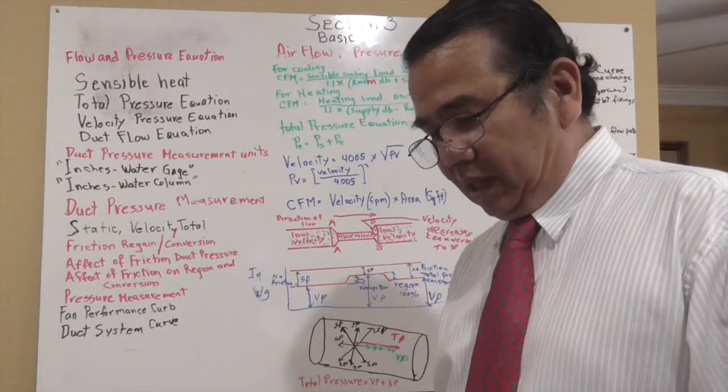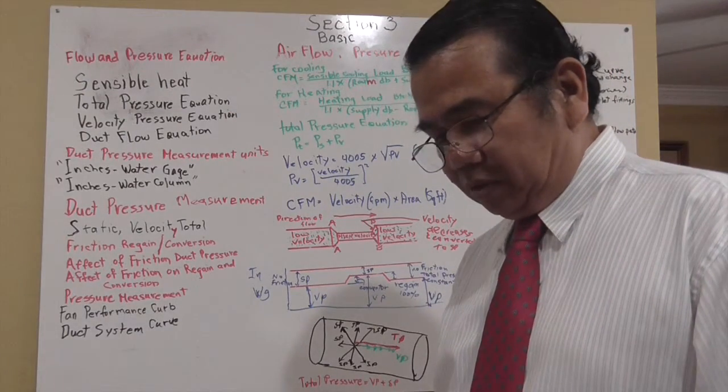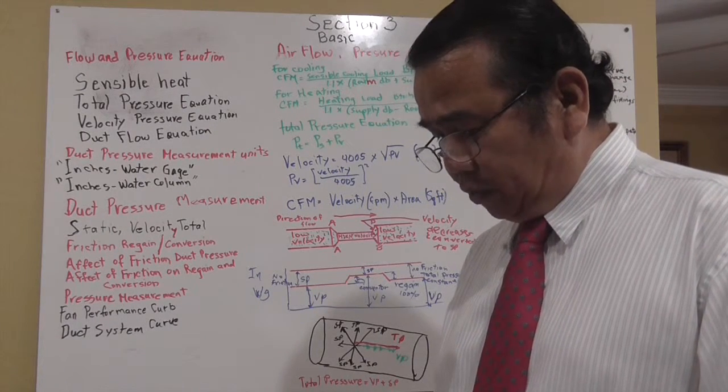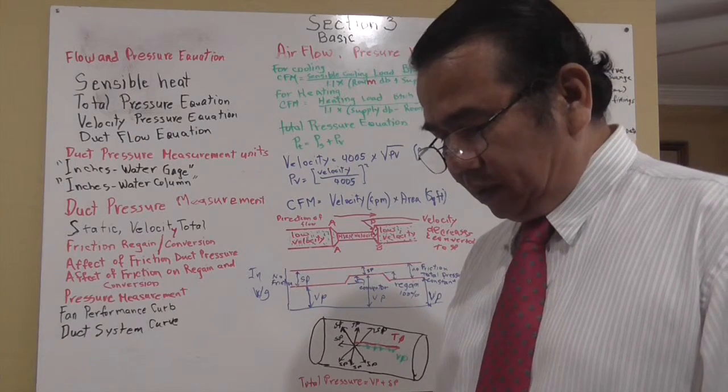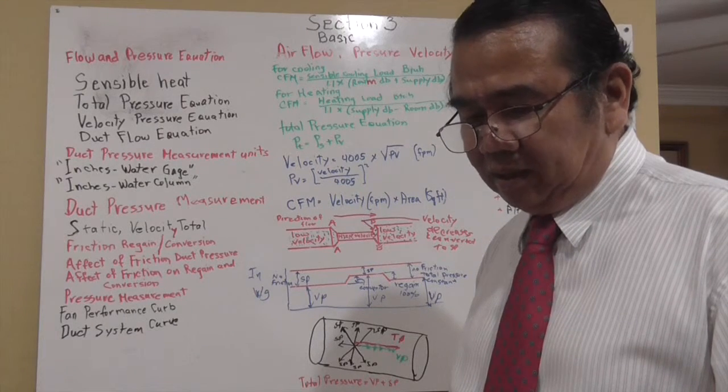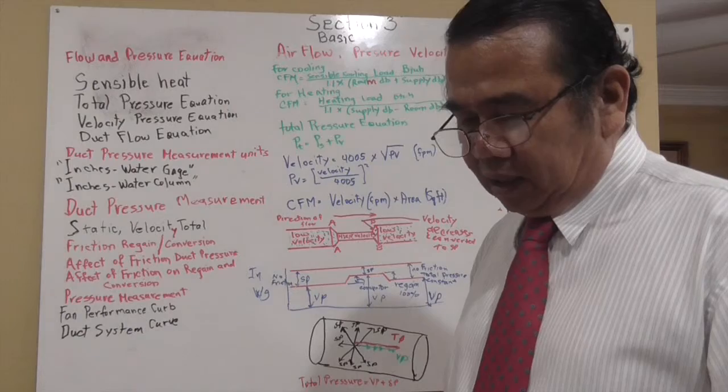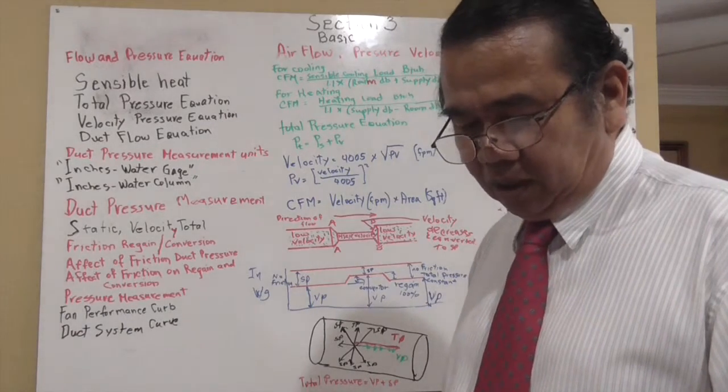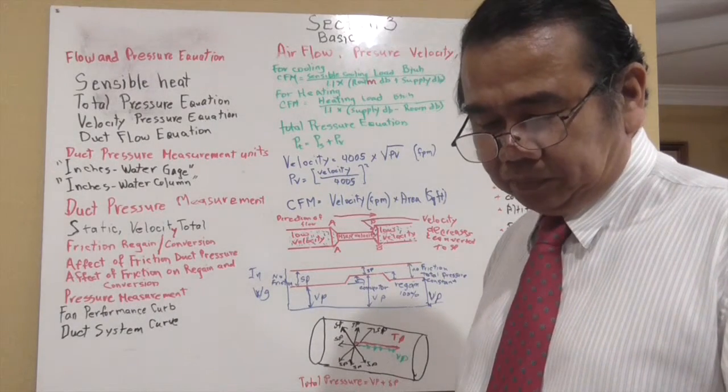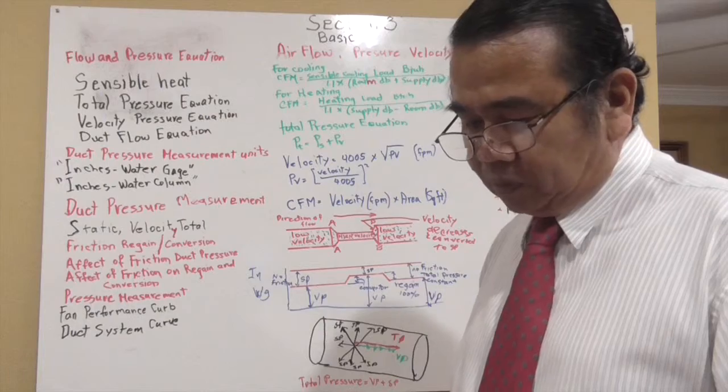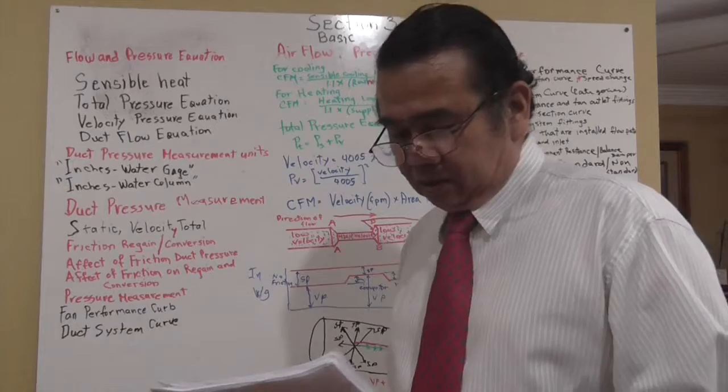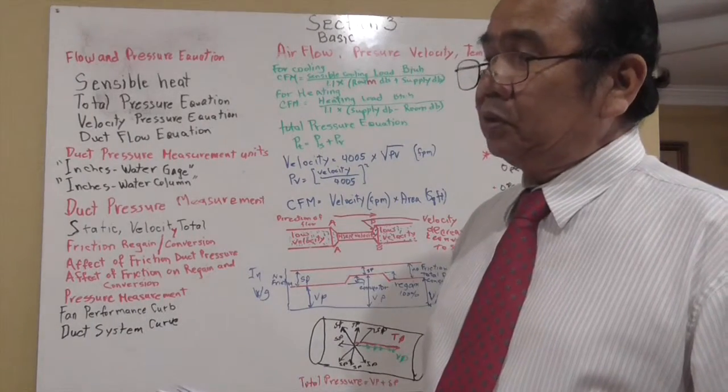Altitude and temperature correction: standard air density is 0.075 pounds per cubic foot at 70 degrees Fahrenheit at sea level. Changing altitude and/or temperature causes changes in air density and viscosity. Charts are used for correction purposes.